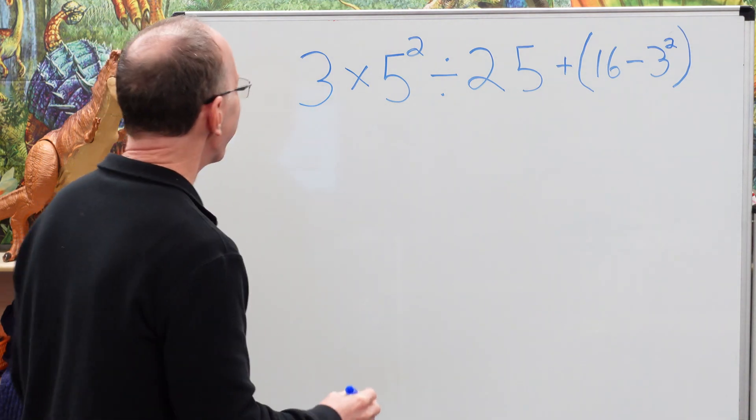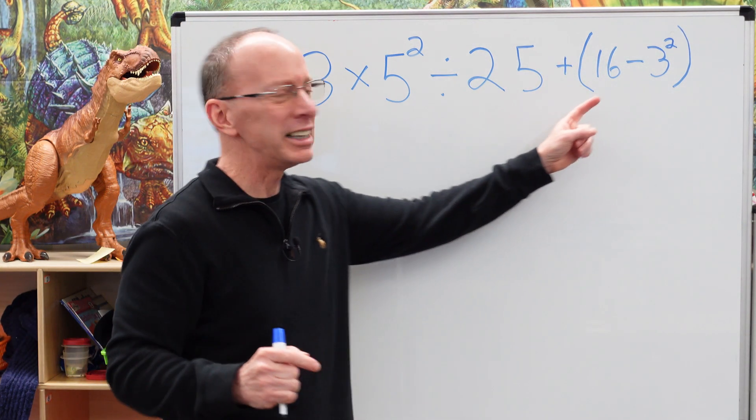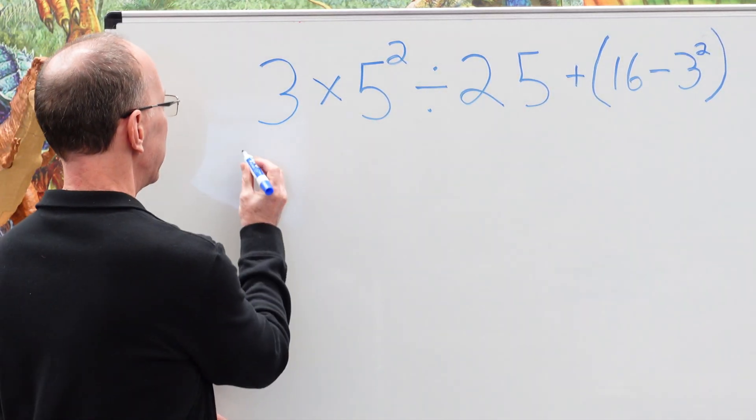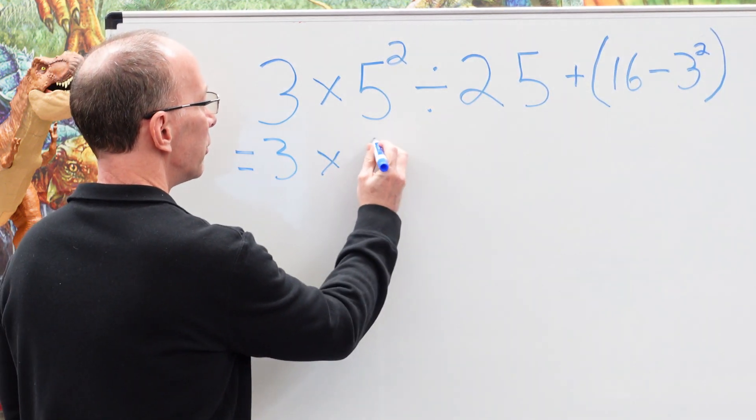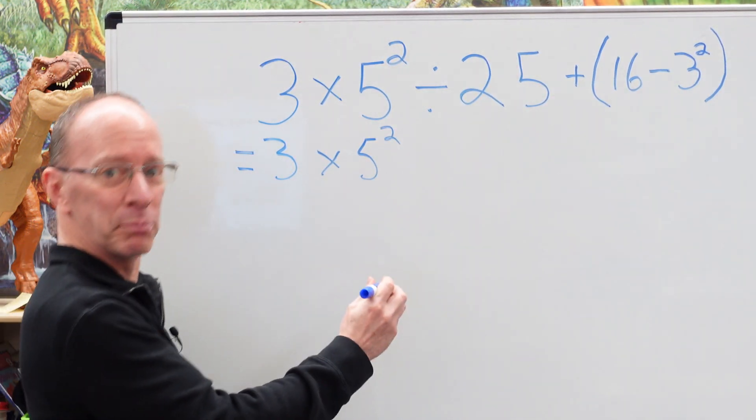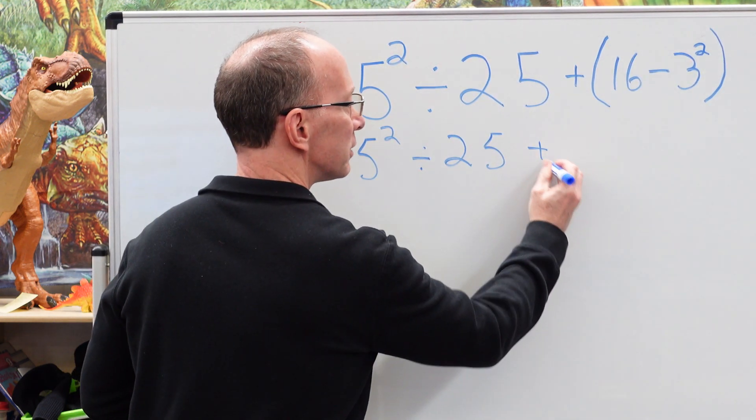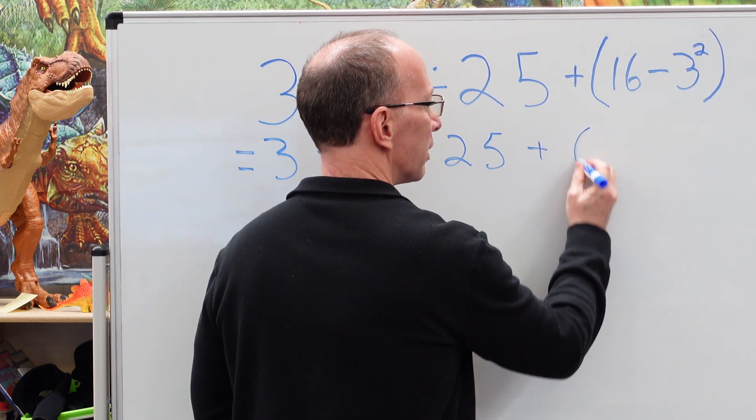Alright. Welcome back. Okay. We're always trying to have fun on this show here. We need to do what's inside parentheses first. So I'm going to go ahead and rewrite this. So we have 3 times 5 to the second power divided by 25 plus. And let's go work what's inside these parentheses.